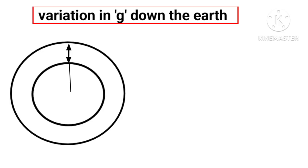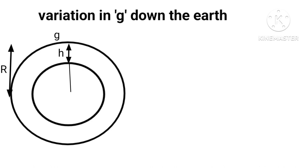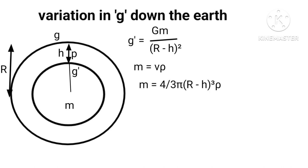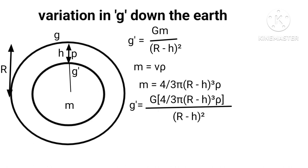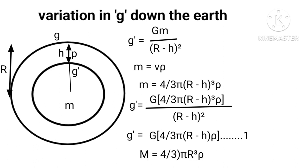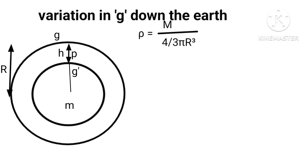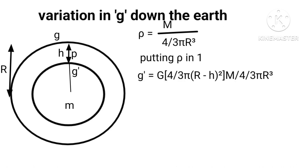Now let the acceleration at a depth h below the surface of earth of radius R be g, and we need to find the acceleration at point P — let it be g dash. Let the mass of earth at P be M. Hence g dash equals GM upon (R minus h) squared. Replacing M using M equals volume times rho equals four-thirds pi times (R minus h) cubed times rho.